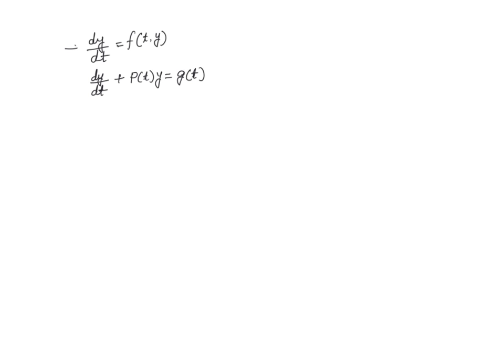The most general format for representing the first-order differential equation is dy/dt = f(t, y), where the function on the right-hand side has two variables. t is the independent variable, and y is the dependent variable which depends on t, so y = y(t).